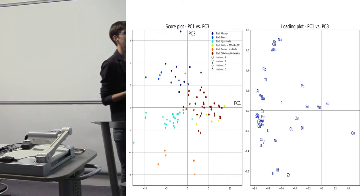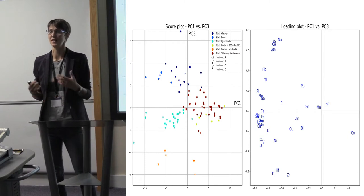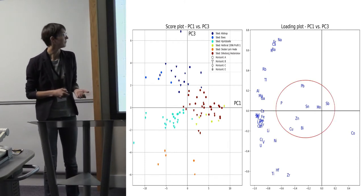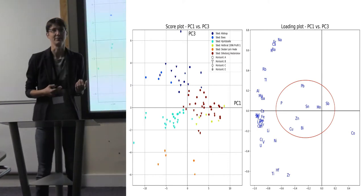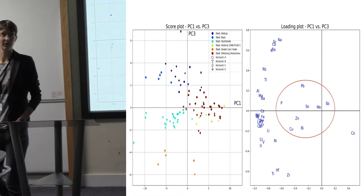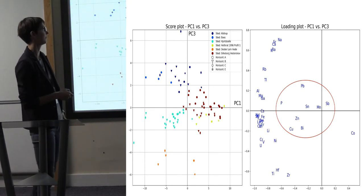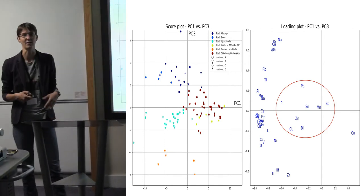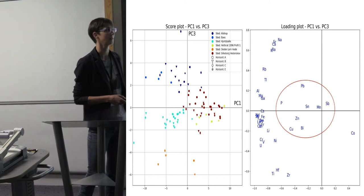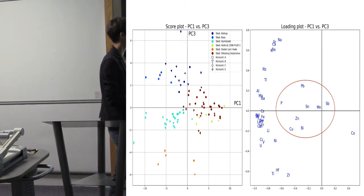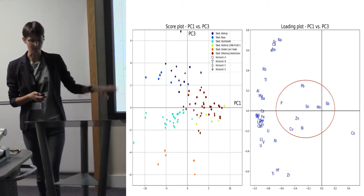The principal component analysis primarily reflects the natural conditions and processes. But if you look at these elements over here, these are often associated with human activities. Since they're placed here in the diagram, this might indicate they've been influenced by human activities in the field system. This is potentially quite interesting.